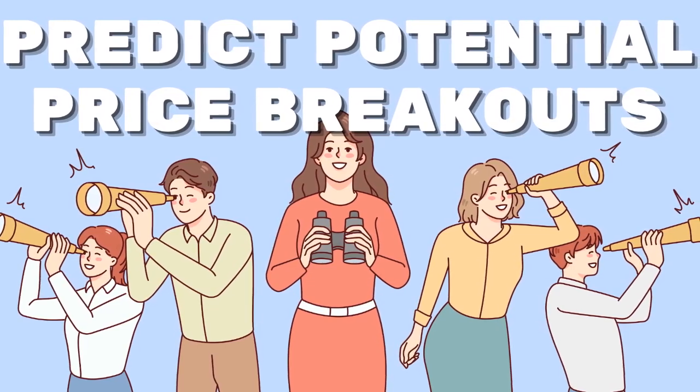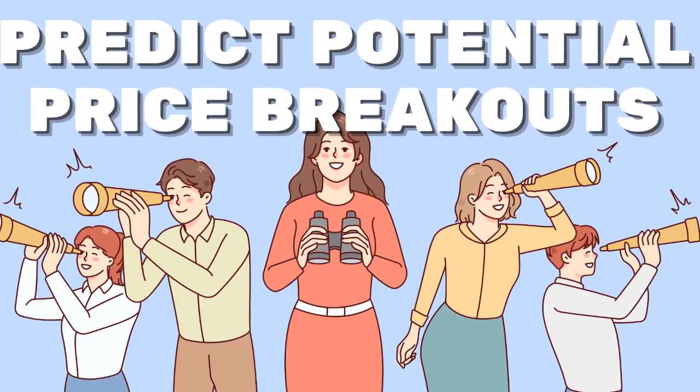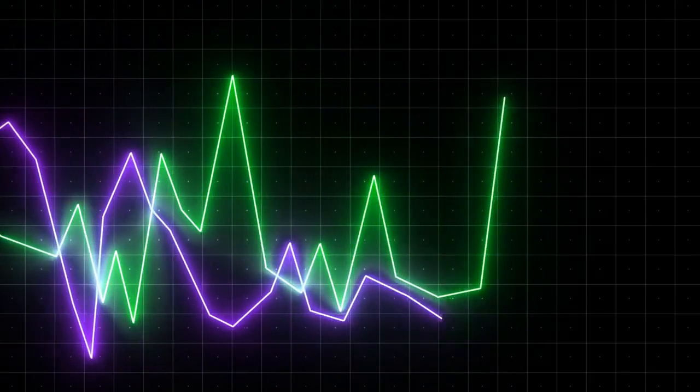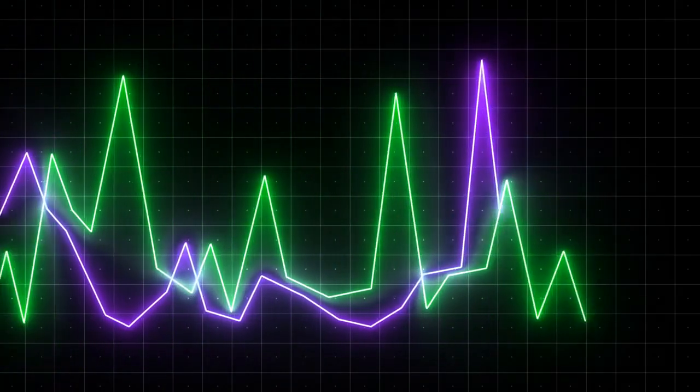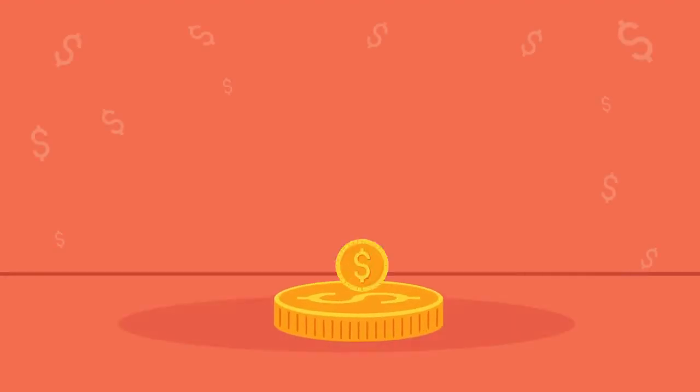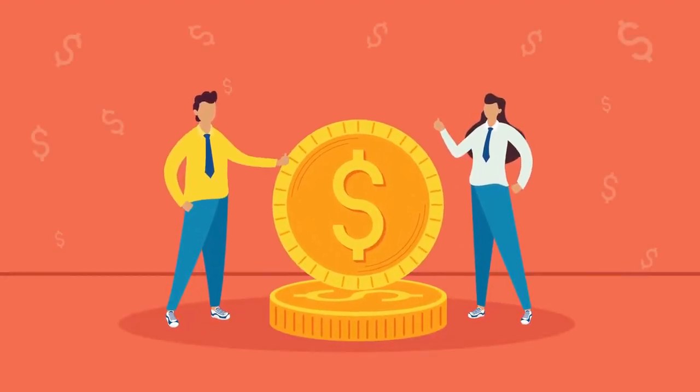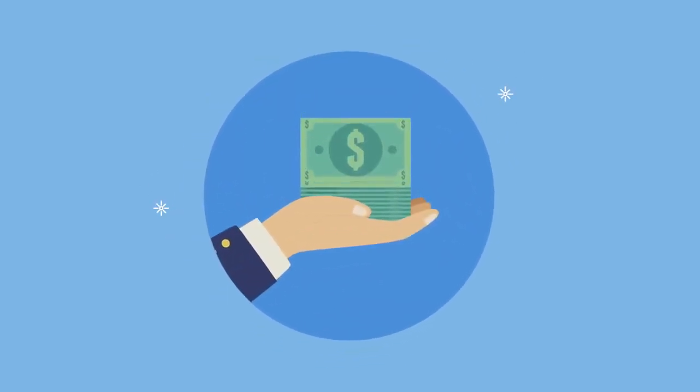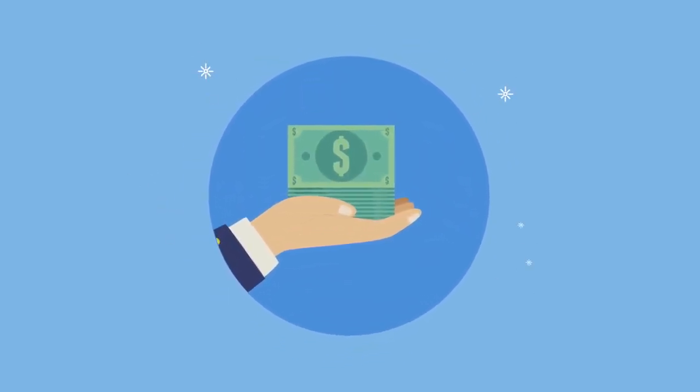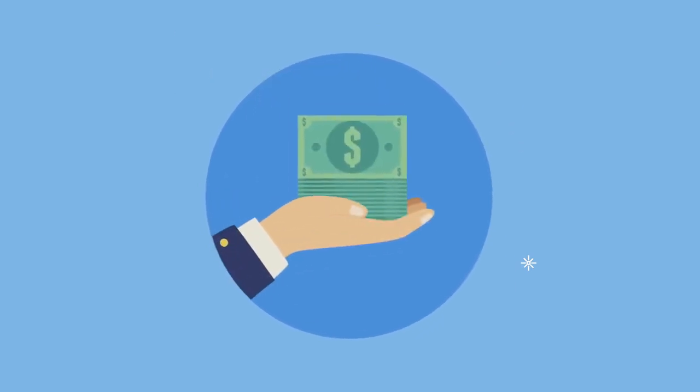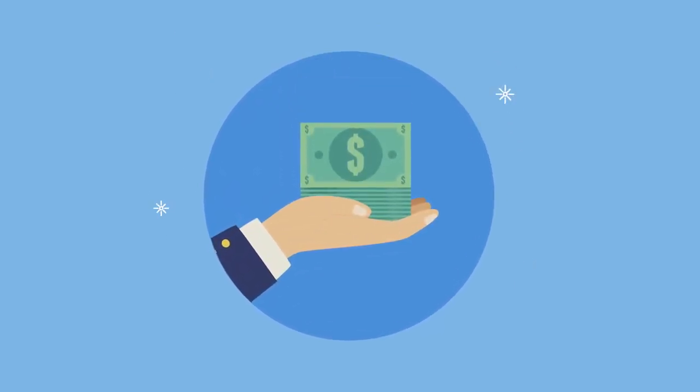Two well-known traders, Steph and Random Crypto Pal, have independently observed that XRP is entering a period of Bollinger Band tightening, something that has historically preceded enormous gains for the asset. Random Crypto Pal put it simply, something is going to happen soon for XRP. Steph echoed this sentiment, noting that XRP is coiling on the monthly chart, a signal of potential volatility and an imminent move.